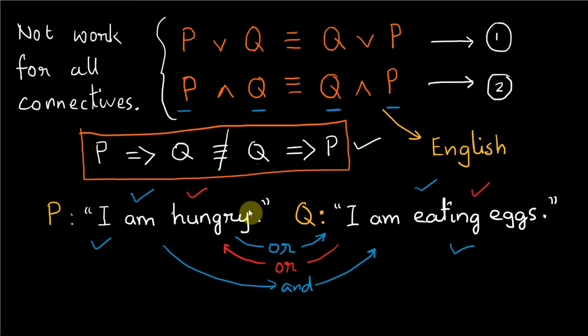The second equivalence uses conjunction or and logic. Therefore the statement I am hungry and I am eating eggs is equivalent to saying I am eating eggs and I am hungry. If one statement is false, the compound statement is false. Both must be true for the compound statement to be true. Whatever the outcome of P and Q, the equivalence holds.